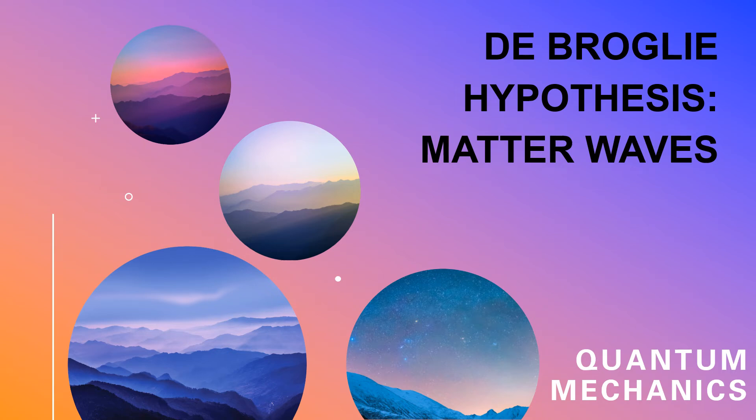De Broglie hypothesis of matter waves. By 1924, it became evident that light has dual nature. The phenomena like interference, diffraction, polarization, etc. are explained by using wave nature of light. The phenomena of photoelectric effect, Compton effect, etc. are explained by using particle nature of light.